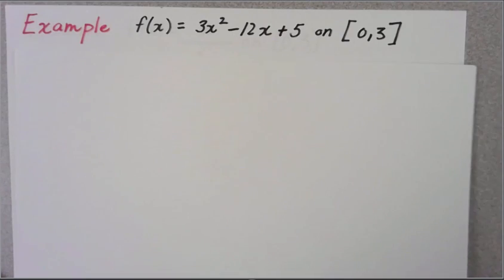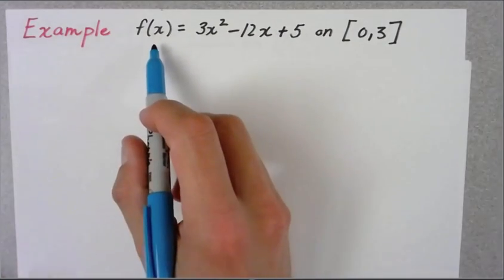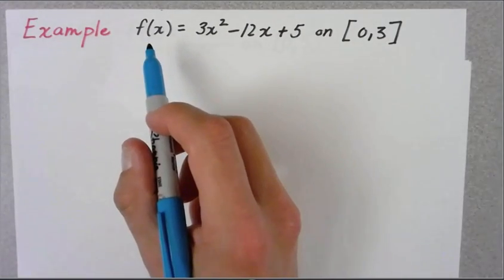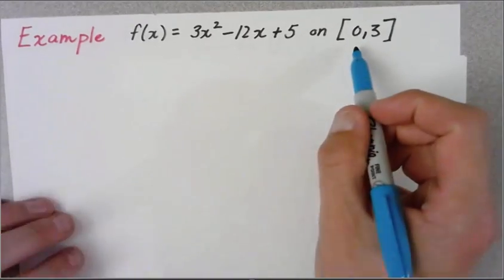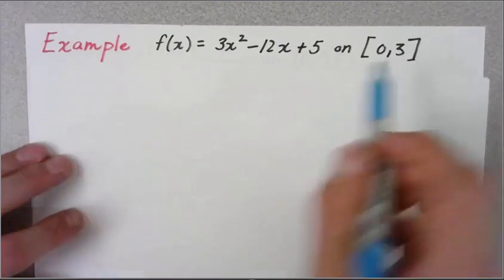Let's look at our first example. We're going to find the absolute max and min of this function: 3x² - 12x + 5 on the closed interval from 0 to 3.